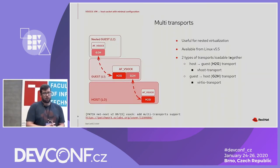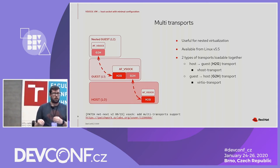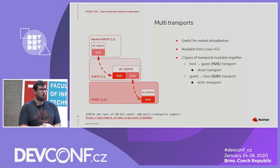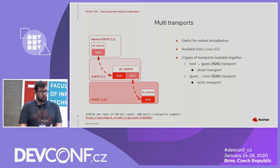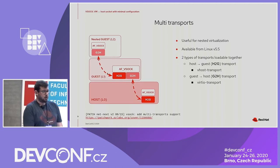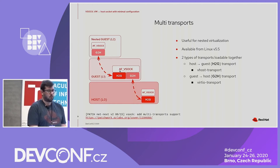Now we can talk about new features. The first is multi-transport. Before Linux 5.5, the VSOCK core could handle only one transport at runtime, which meant that in a nested VM environment we couldn't load both host-to-guest and guest-to-host transports together. Starting from Linux 5.5, the VSOCK core can handle two types of transport simultaneously — host-to-guest to handle the host part and guest-to-host to handle the guest part. In the QEMU/KVM environment, the L1 guest loads both virtio transport to communicate with L0, and vhost transport to communicate with L2.